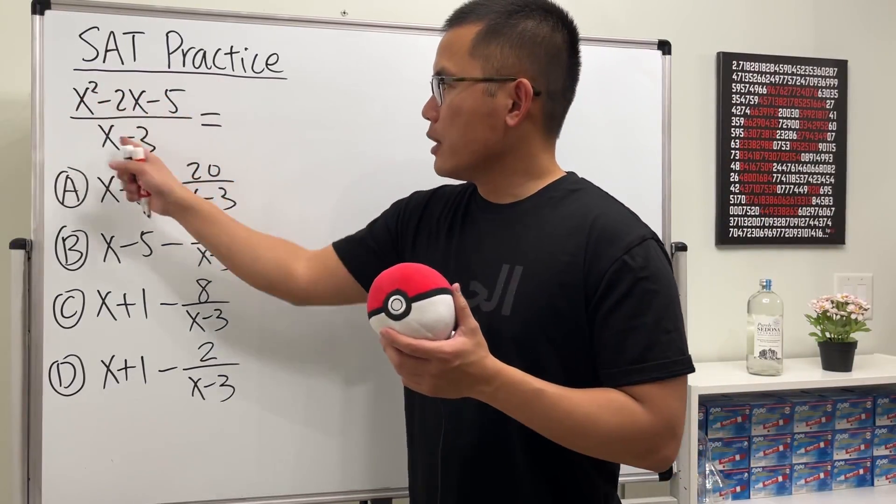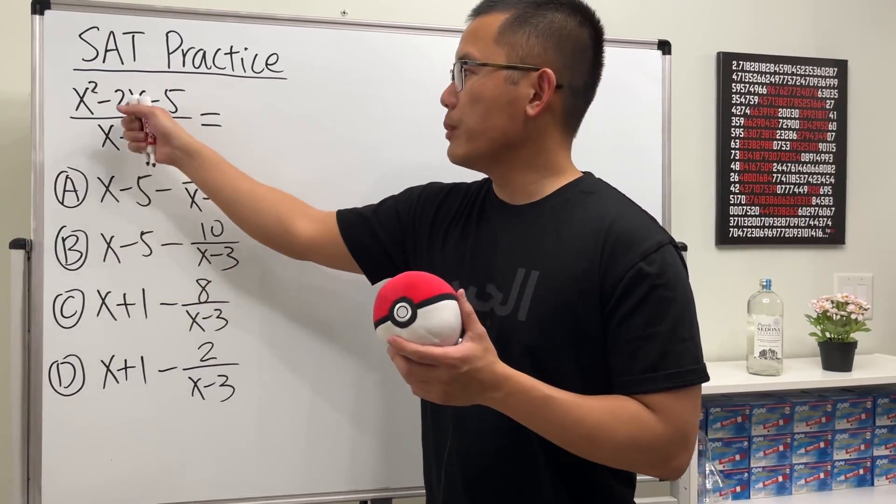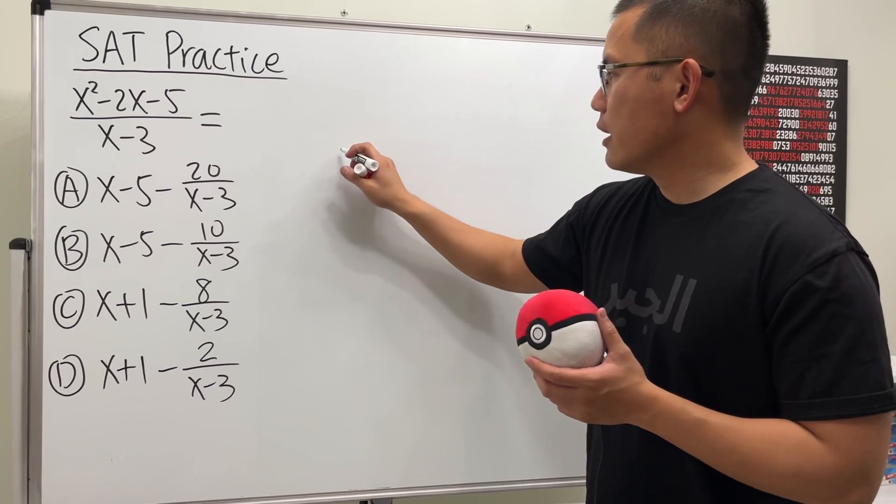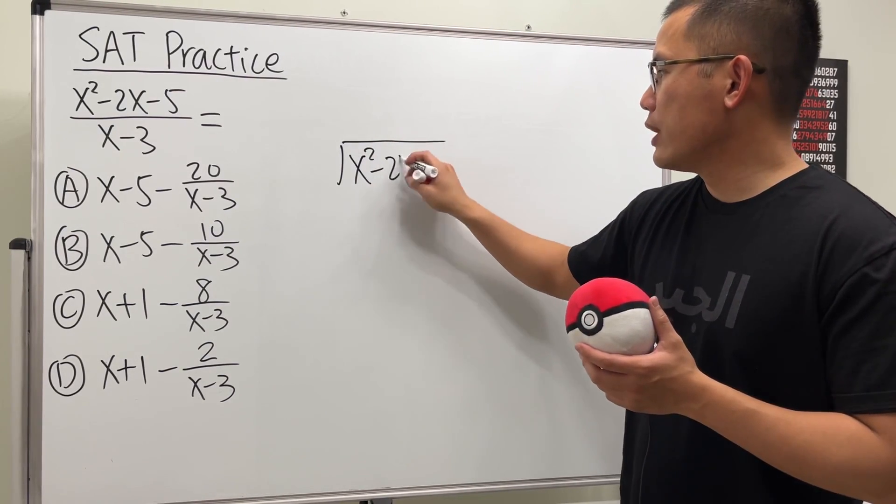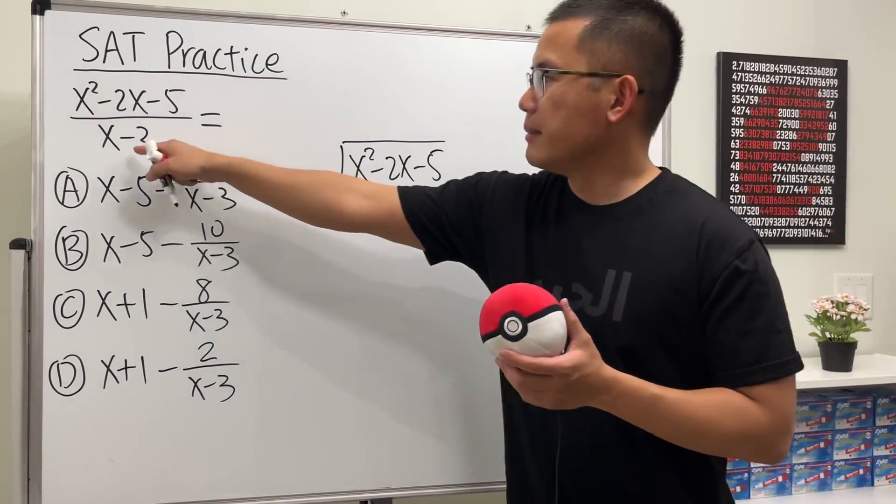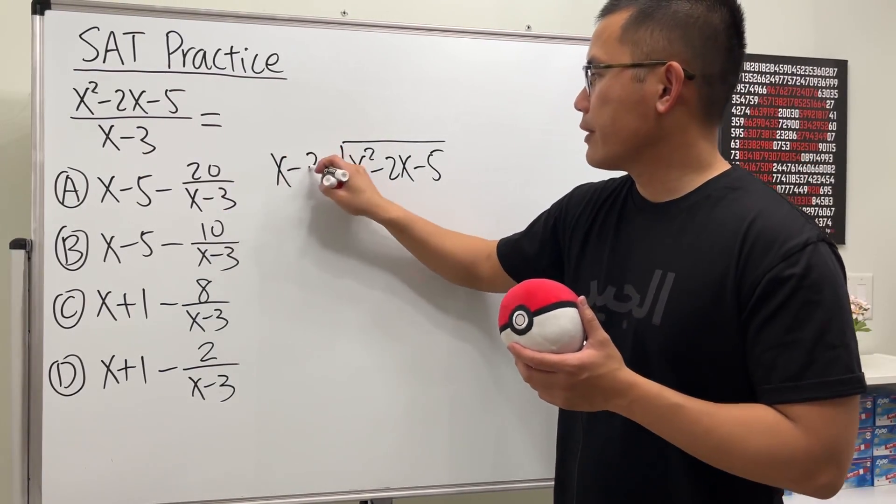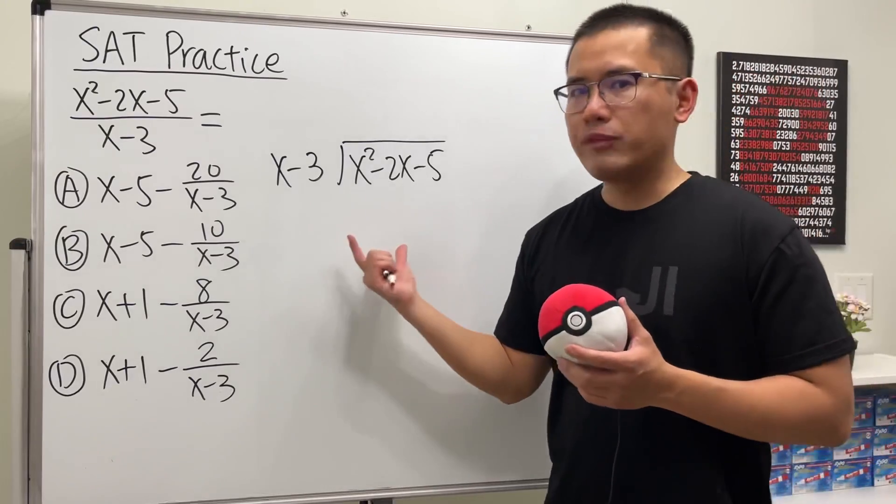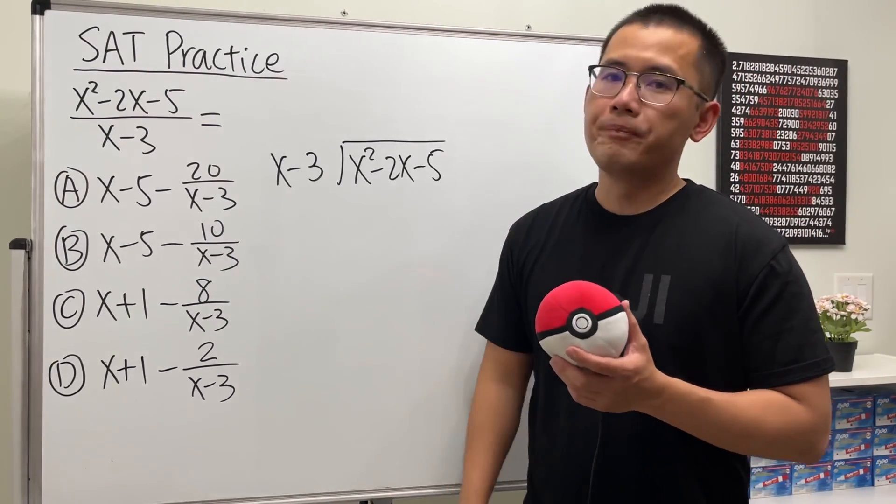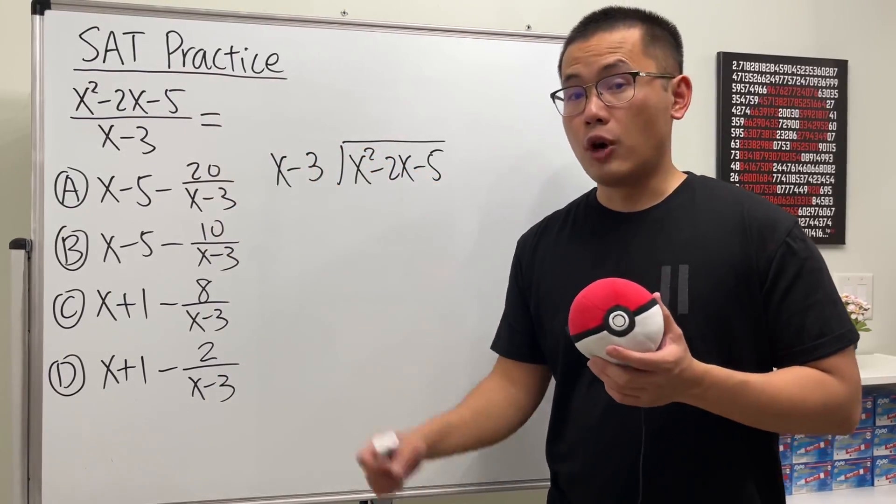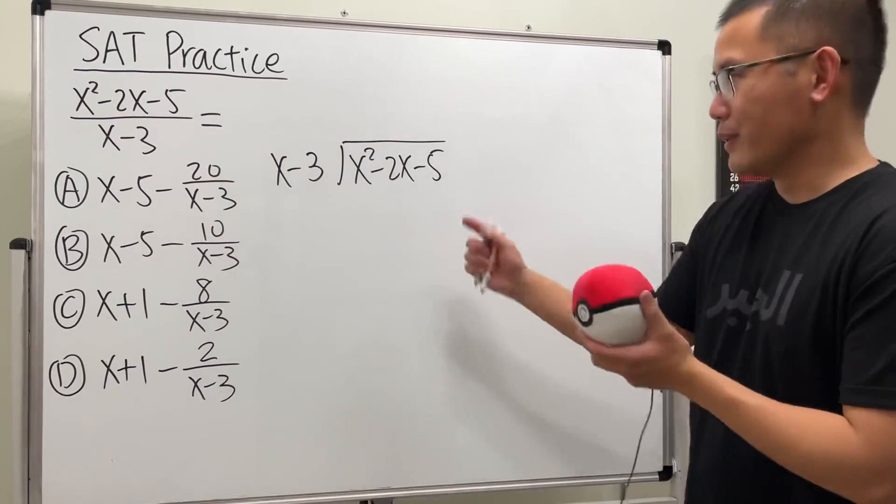So here we go. To use the polynomial long division, we look at this, and then we put the top inside of the division symbol like this, and we have x squared minus 2x minus 5, and then the bottom, we'll just put it on the outside. And in fact, the reason that we have to do this is because we noticed that we have the fractional part right here. So that means the top is not factorable, so we will have to do the following.